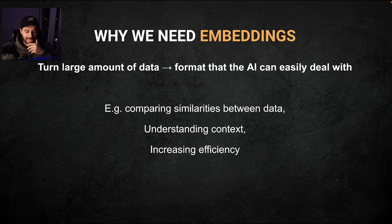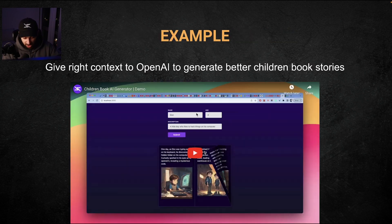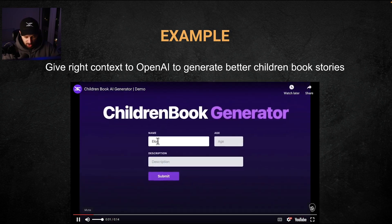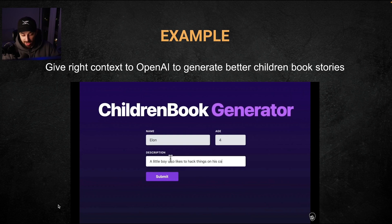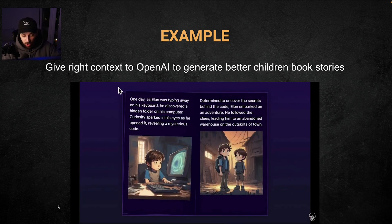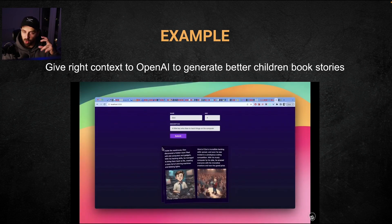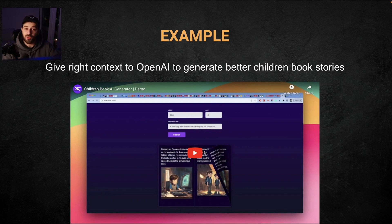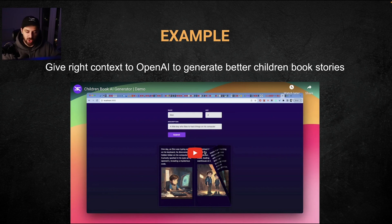So first, why do we need embeddings? What is this thing? Embeddings basically turn a large amount of data into a format that makes it very easy for the AI to process. A concrete example of how I use embeddings is this app that I've created — a children's book AI generator. A parent can specify a description of their child and age, and then the AI will generate a book with text and images. The reason I'm using embeddings and vector databases is to improve the quality of the results. If a parent wants to create an adventure book for a five-year-old boy, I want to provide the AI with high-quality children's books about adventure for children in that age range, because then the AI generates much better results. Embeddings help provide much better context for the AI — the quality of context you provide has a very high correlation to the quality of the output.